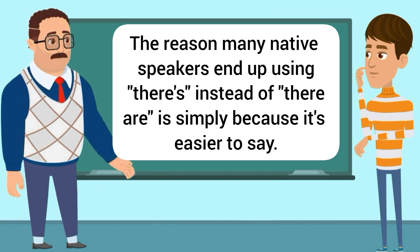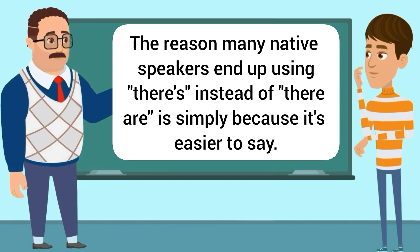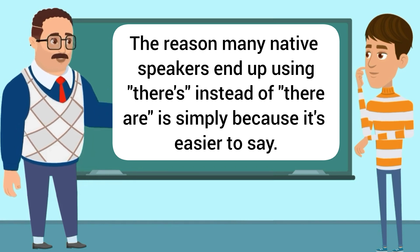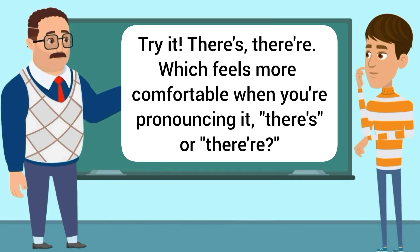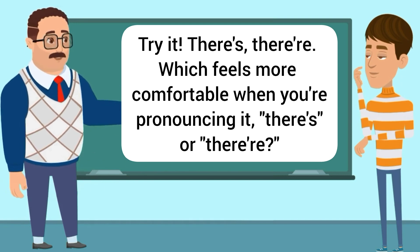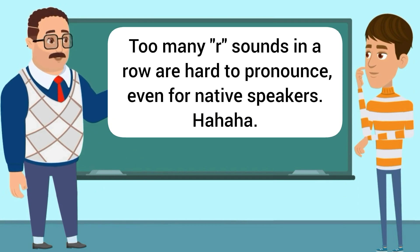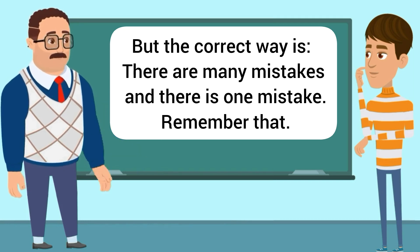The reason many native speakers end up using 'there's' instead of 'there are' is simply because it's easier to say. Try it — 'there's,' 'there are' — which feels more comfortable when you're pronouncing it? Too many 'are' sounds in a row are hard to pronounce, even for native speakers. But the correct way is 'there are many mistakes' and 'there is one mistake.' Remember that.